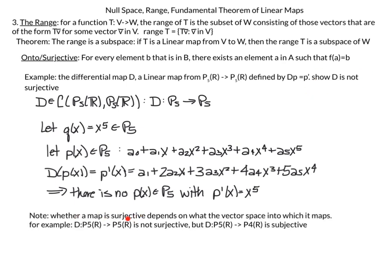Note that whether a map is surjective depends not just on the mapping T but also on which vector space it maps into. For example, D from P5 to P5 is not surjective, but D from P5 to P4 would be surjective.